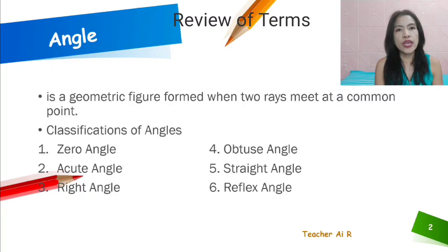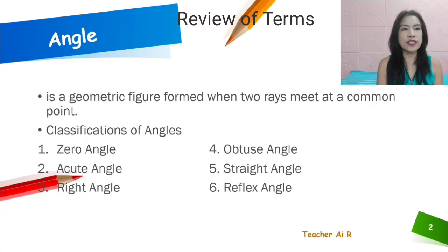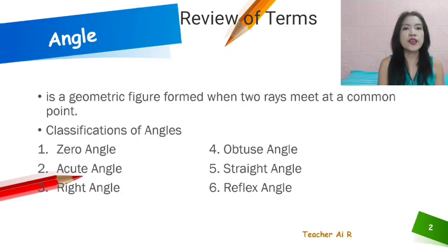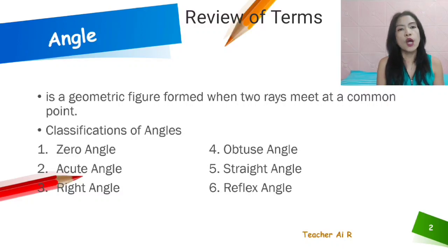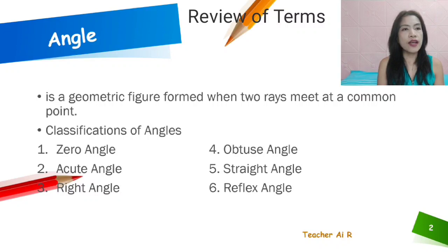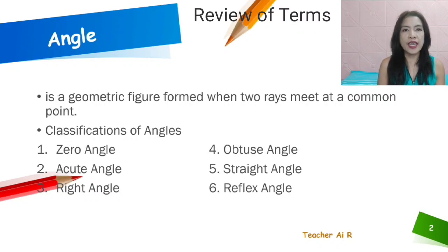And we have some classification of angles, such as the zero angle, the acute angle, right angle, obtuse angle, straight angle, and reflex angle. Those are the kinds or the classification of angles.